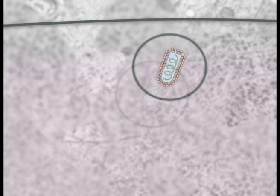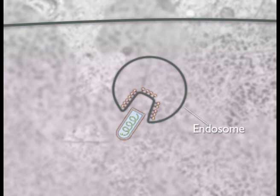During endocytosis, the virion is carried into the host cell inside an endosome. After fusion takes place, the internal virion components are released into the cytoplasm.